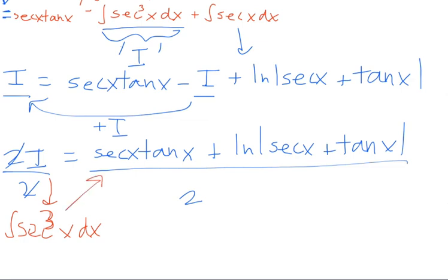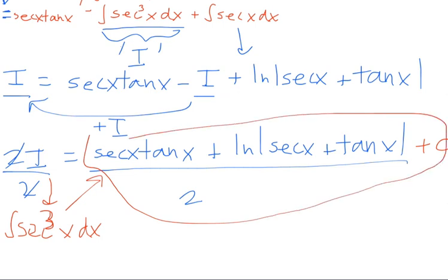So this is the answer to it, and don't forget there's a plus c. This is the answer: secant x tan x plus the natural log of secant x plus tangent x all over two. And I will never ever forget this answer because I blew it on that integration bee. And hopefully now you will also never blow this question if you're ever given it.